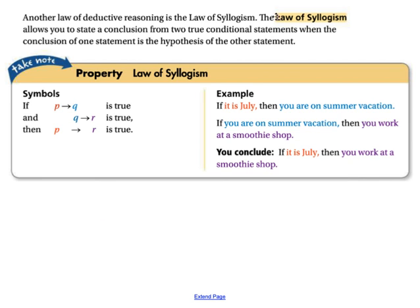Now let's take a look at the law of syllogism, another law of deductive reasoning. This allows us to state a conclusion from two true conditional statements when the conclusion of one statement is the hypothesis of the other. Symbolically, if P implies Q is true, and Q implies R is true, then P implies R is true. For example: if it is July, then you're on summer vacation. If you're on summer vacation, then you work at a smoothie shop. So we can conclude: if it's July, you work at a smoothie shop. It's like the transitive property.